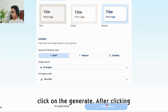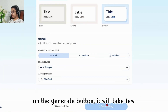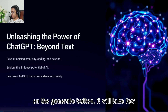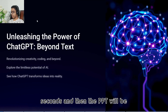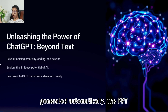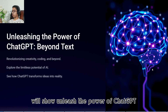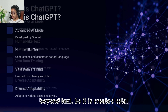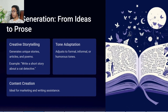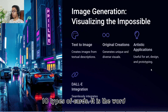After selecting your theme, click on the generate button. It will take a few seconds and then the PPT will be generated automatically. The PPT will show 'Unleash the Power of ChatGPT Beyond Text.'